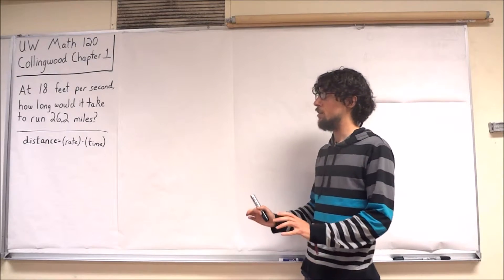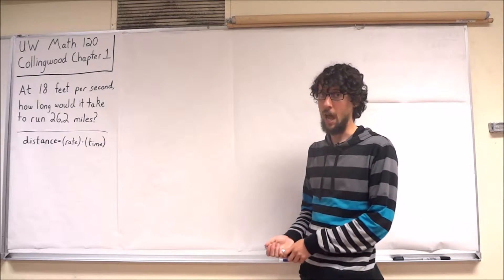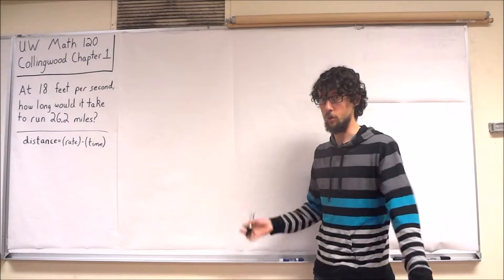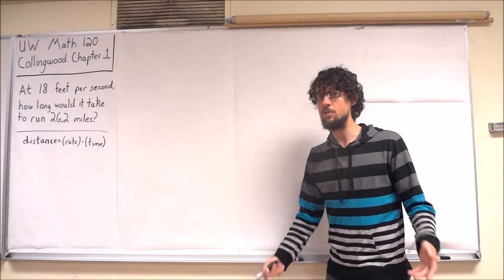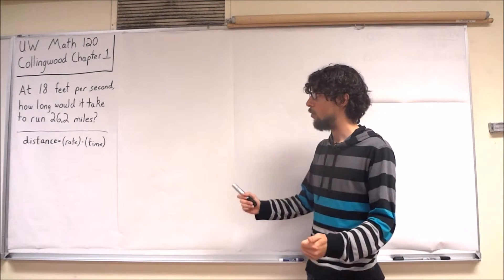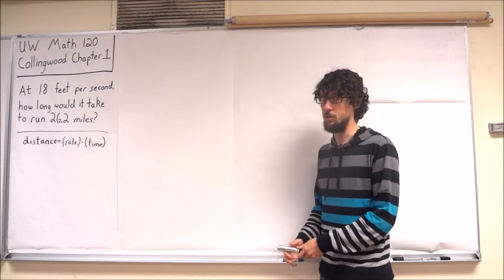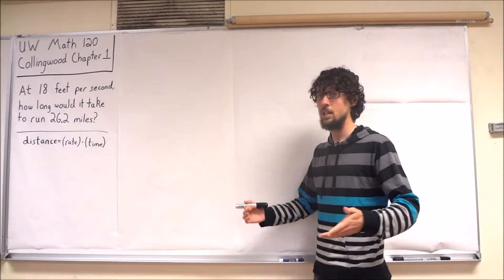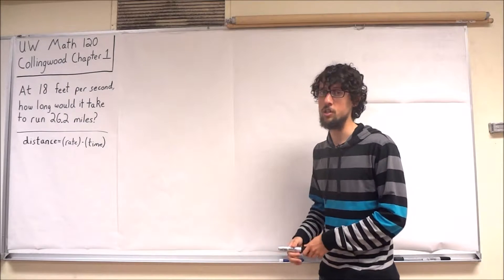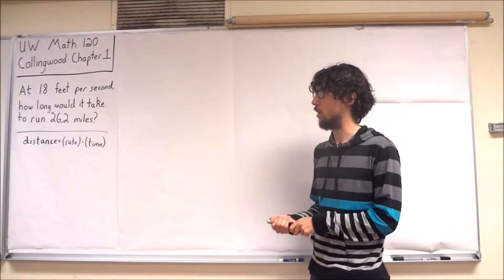You might think that all we need to do is simply divide the distance by the rate, and we're done. And in some sense, you're right. But the most important idea in this first chapter that Collingwood covers is the idea of paying really close attention to the units involved in your problem.